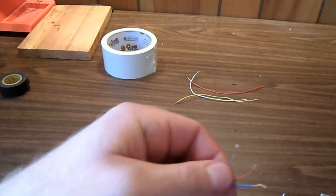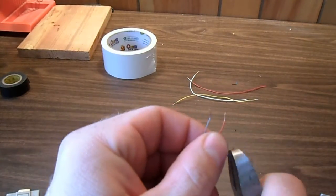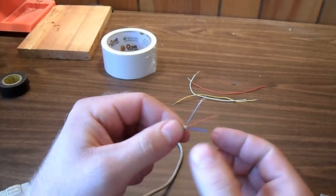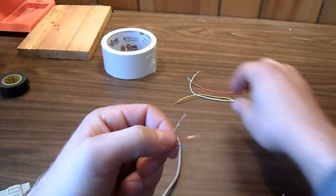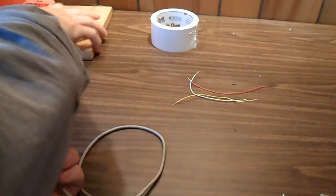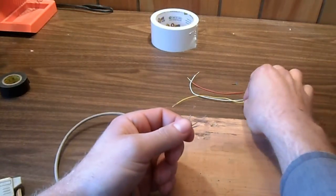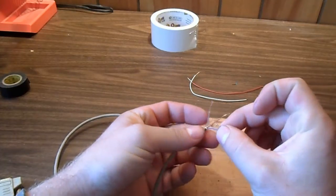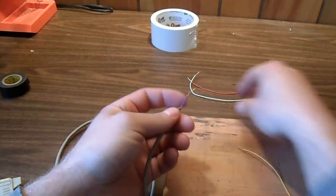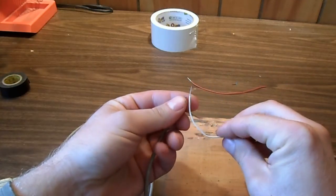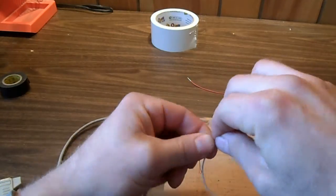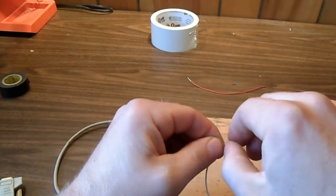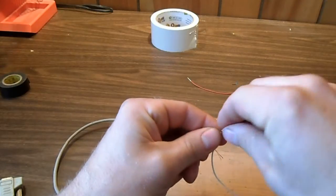Now I'm going to strip these a little more. Now we're going to attach the wires. The blue was the ground, I'm going to choose white for my ground. Twist them together, I kind of like to fold them over a bit too, helps.